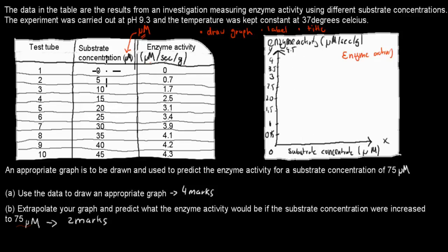For the x-axis, substrate concentration goes in 5-unit steps. We start at 0, then go: 5, 10, 15, 20, 25, 30, 35, 40, 45. This is what you should have done. This will get you lots of marks.